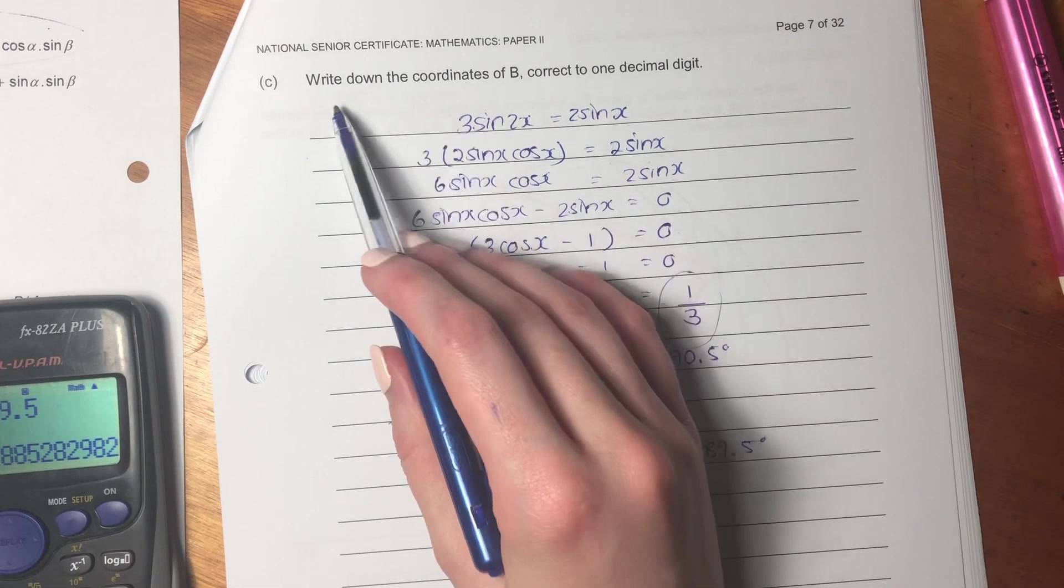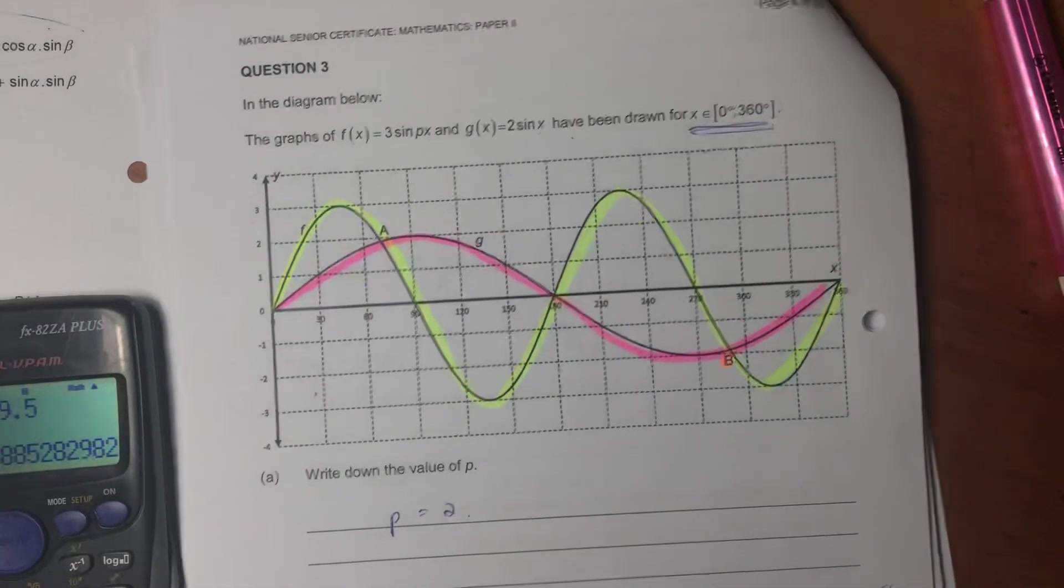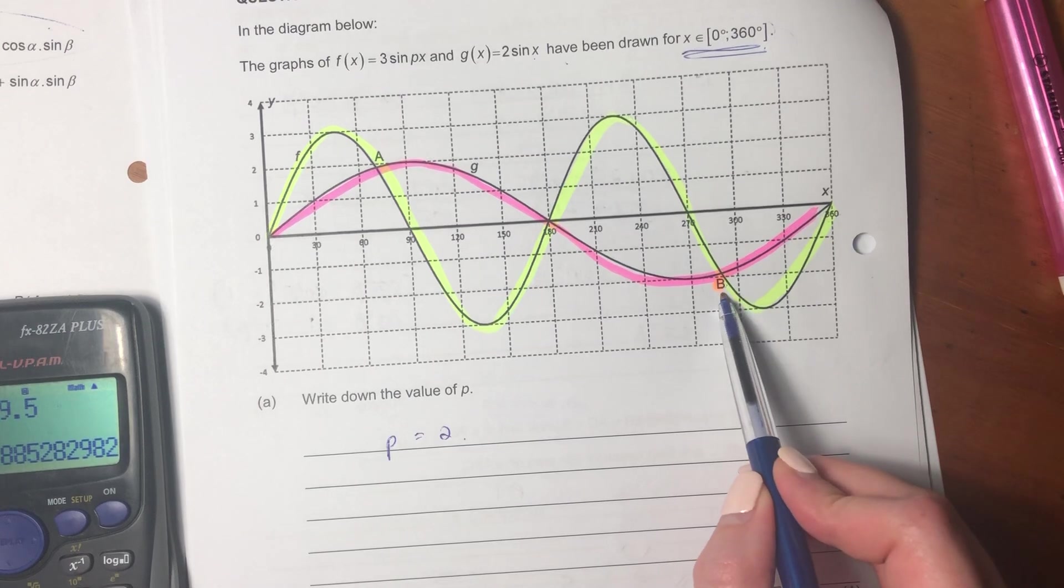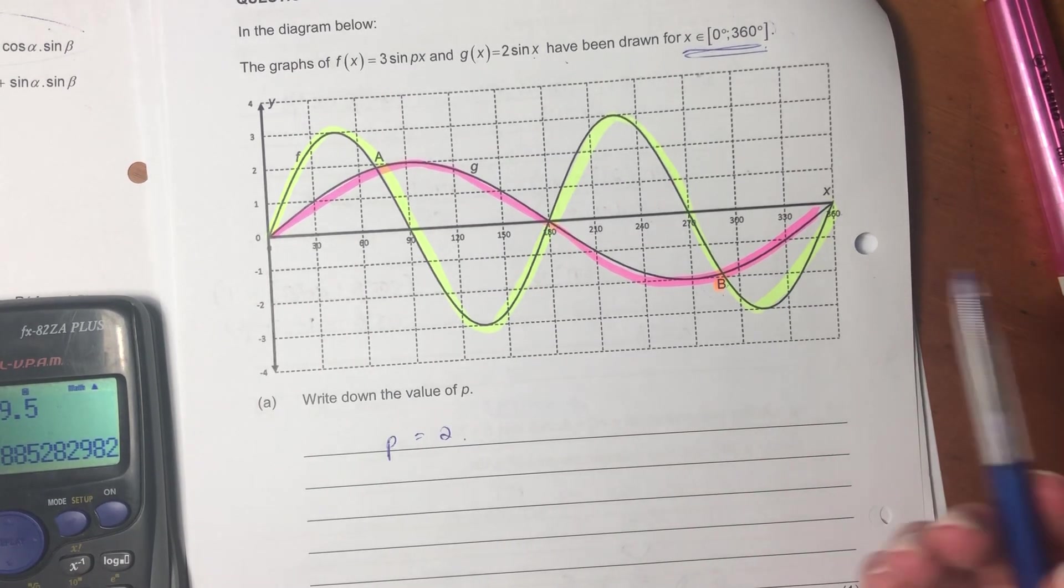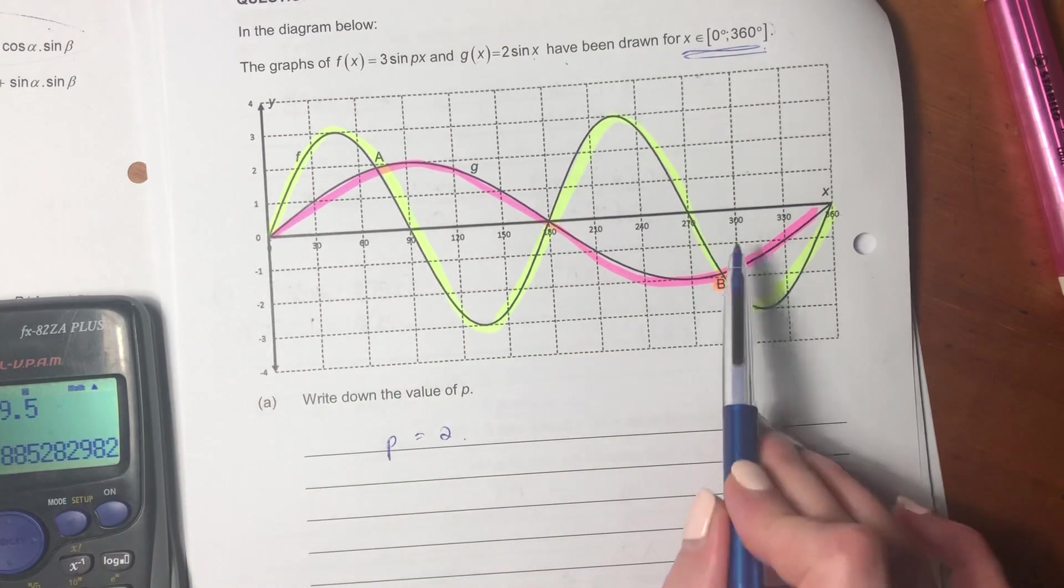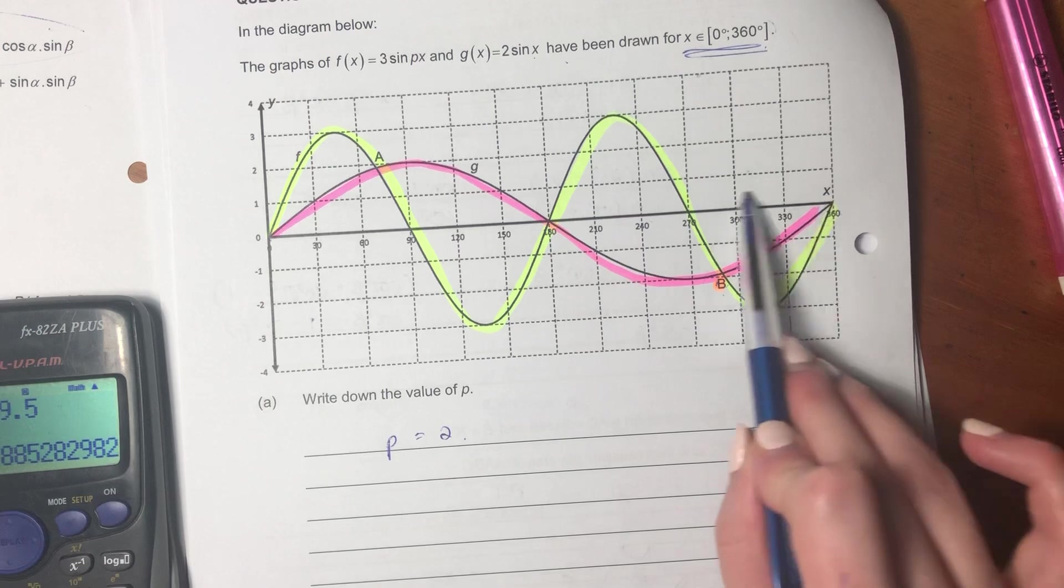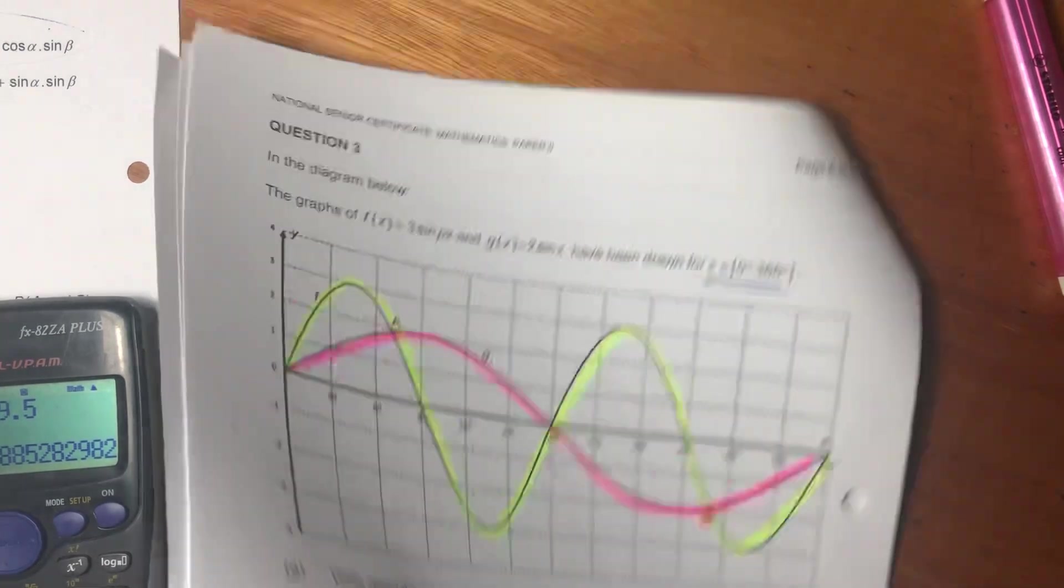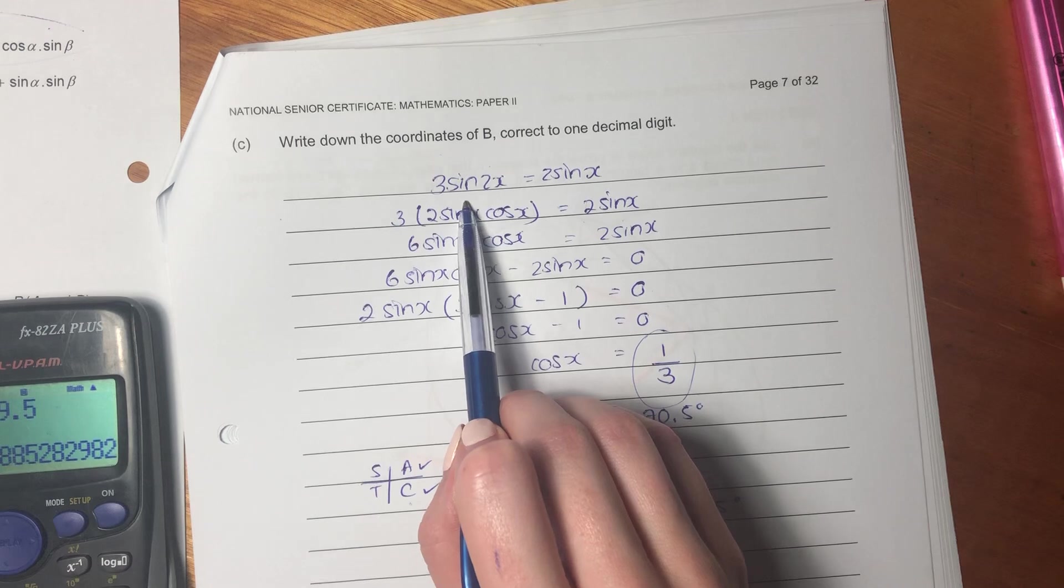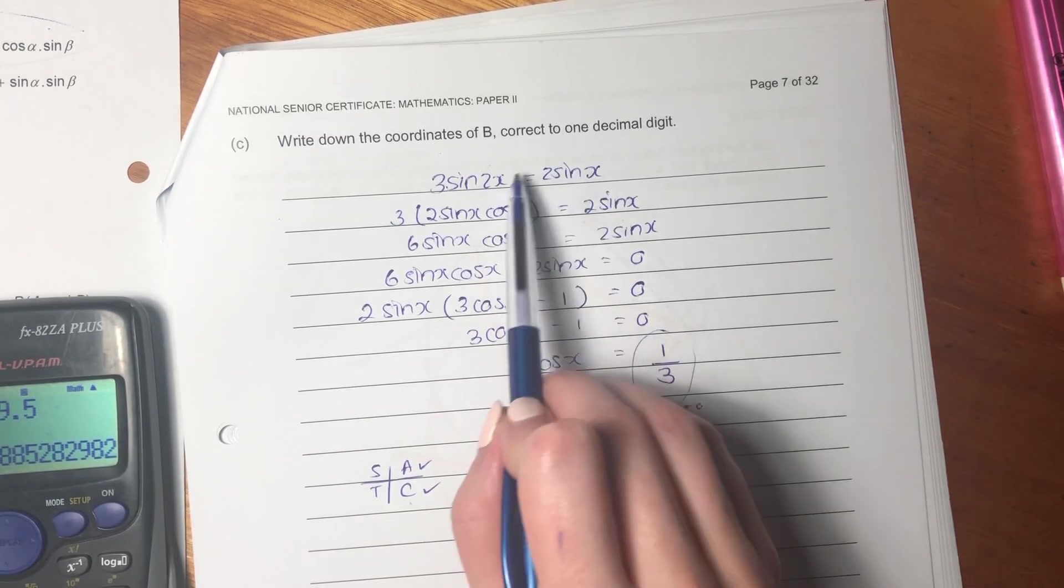Let's now move on to c. So now c says, write down the coordinates of b, correct to one decimal digit. We know that b is sitting over here and it's a point of intersection. There's numerous points of intersection of these two graphs, but it wants b. And it's important to note that b would be between 270 and 360. So I said, no problem. I'm going to make the two graphs equal each other. Then I'm going to have to solve somehow to get a value of x.